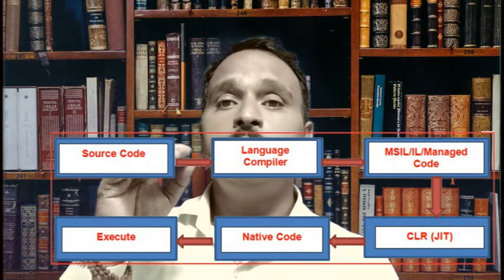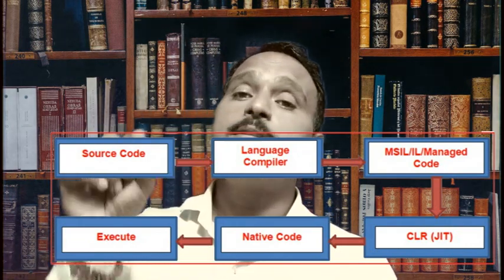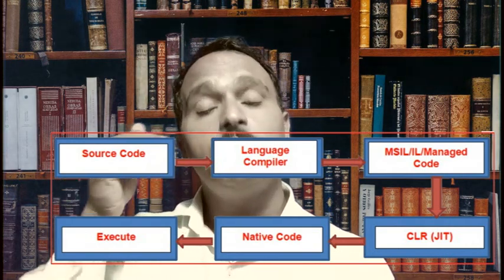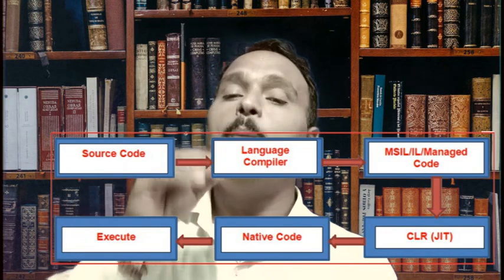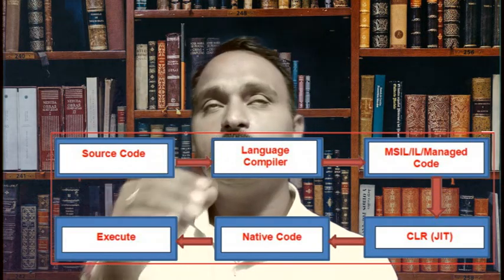In the second compilation, MSIL is converted into native code. Native code means code specific to the operating system, so that the code can be executed by the operating system using CLR. Always the first compilation is slower than the second compilation.